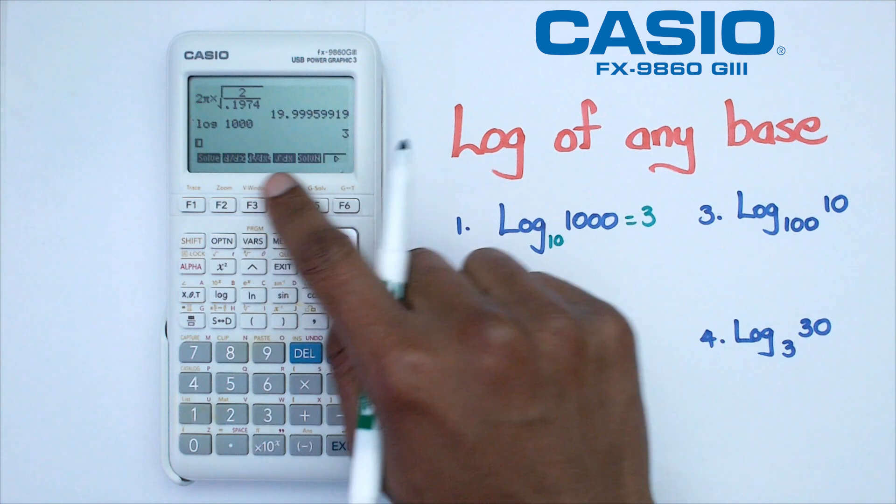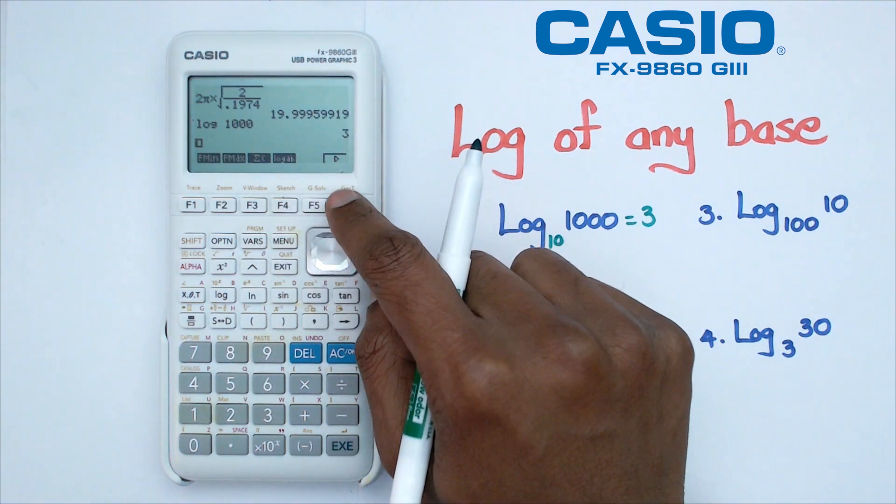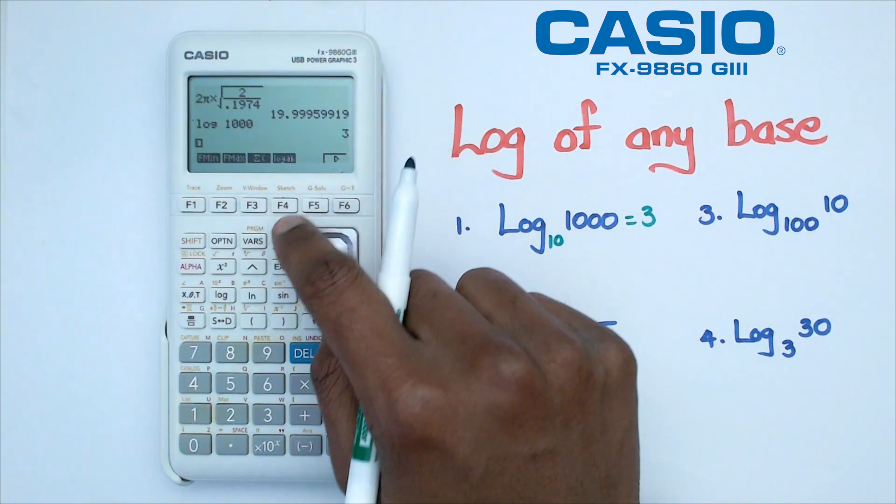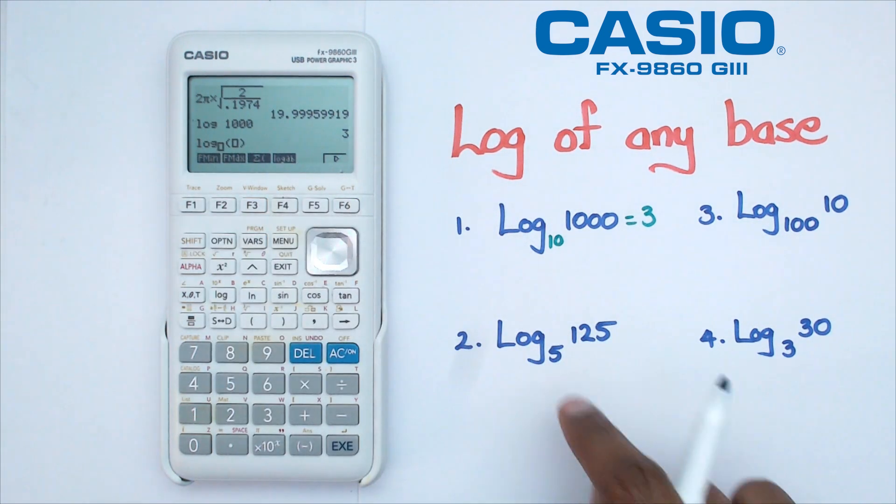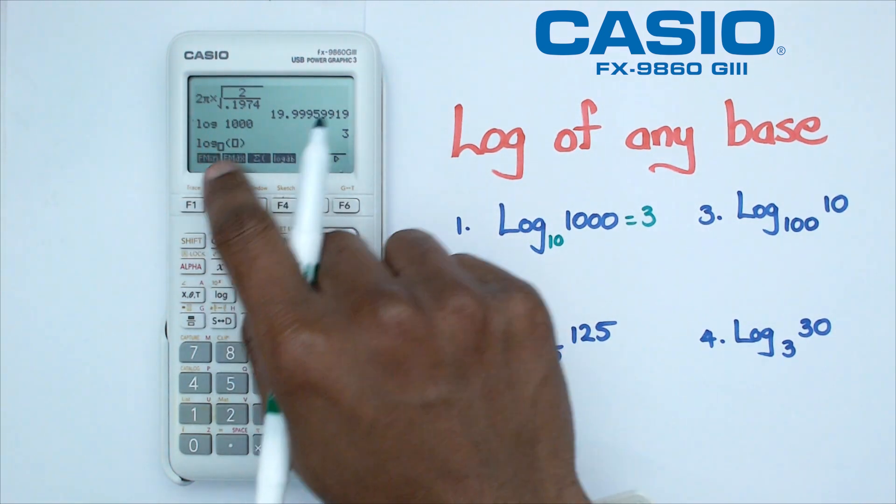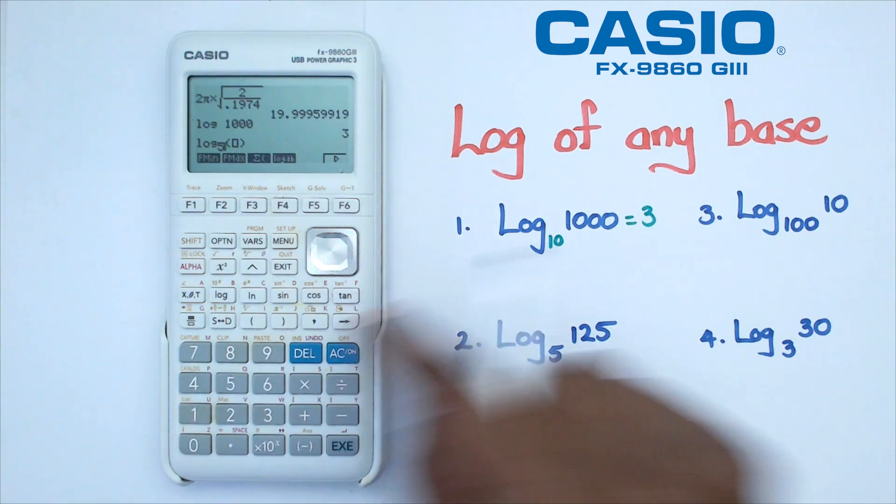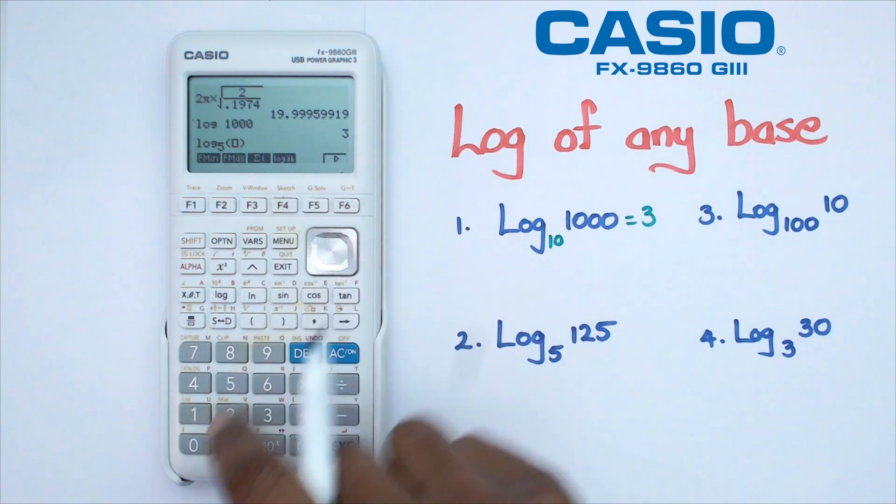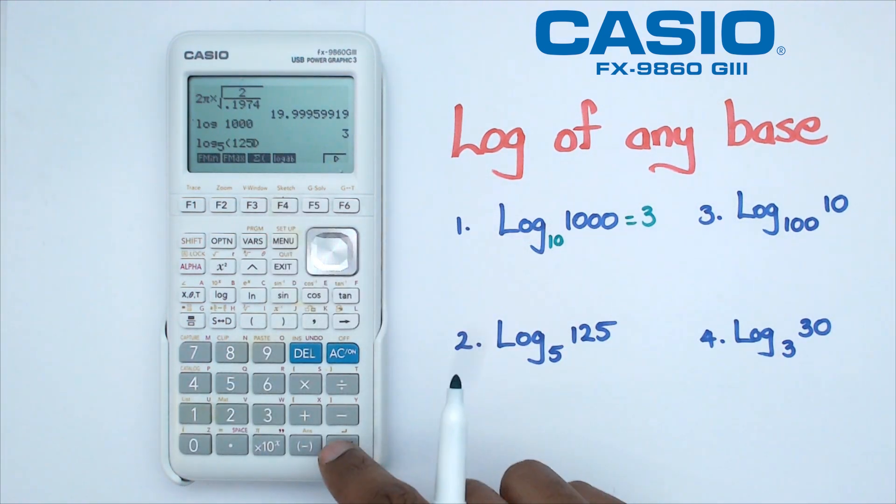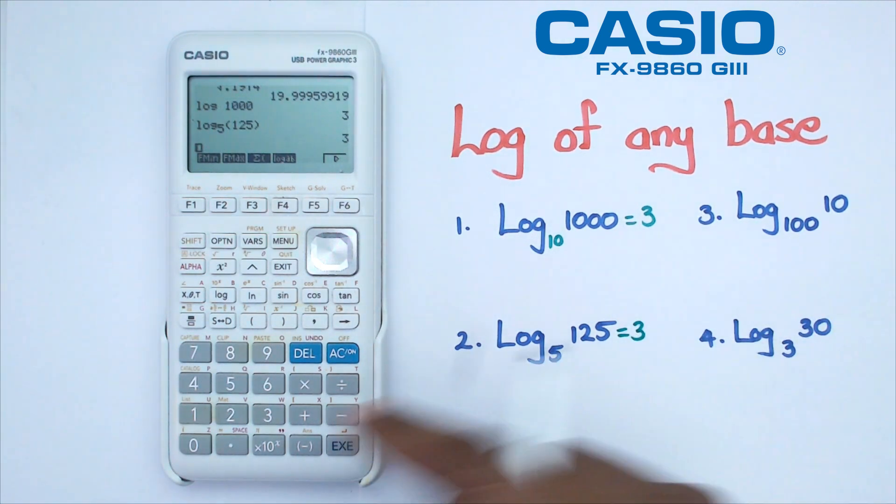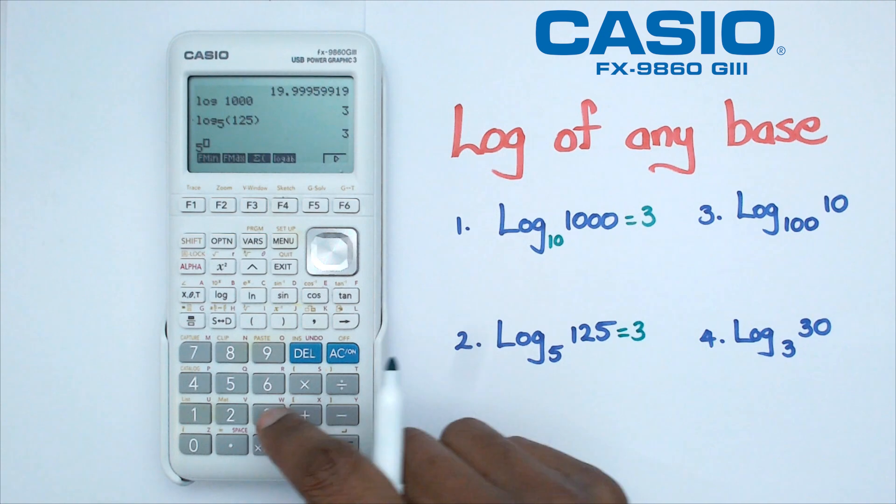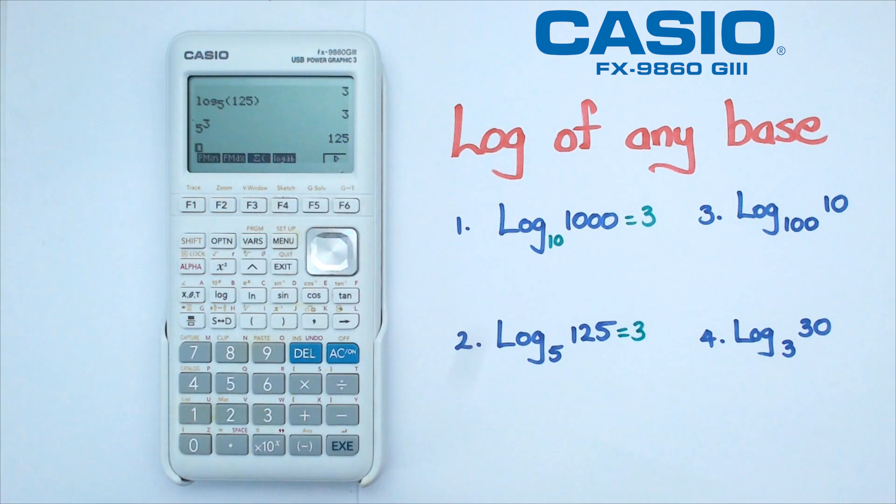So calc mode, and then we're going to click on F6. You should see a log AB button, which is under F4. We're going to click on that. Basically, now we should be able to change the base from the original 10 into a five. Then we're going to put the number in as 125, and we're going to get three as well. The reason we're getting three is because if you think about it, five to the power of three is 125.